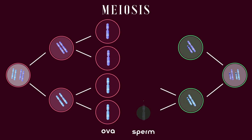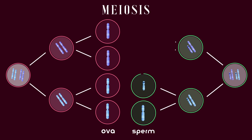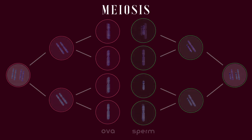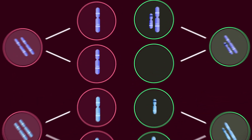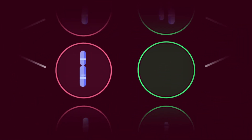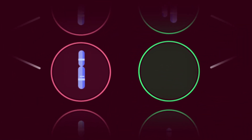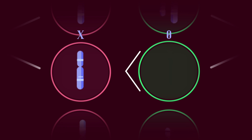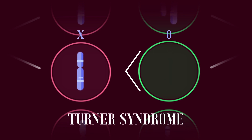Each sperm gets either an X chromosome or a Y chromosome. With Turner Syndrome, a sperm or egg cell may be missing the necessary X chromosome at conception, or the second X chromosome may be defective. If either of these cases occurs, the child will develop with only one active X chromosome in each cell.